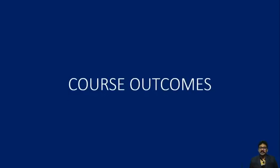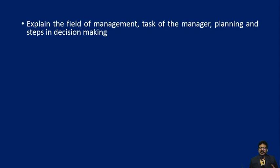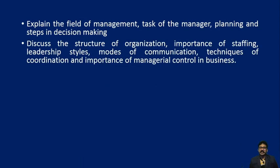After learning this course, a student will be able to do the following. Course Outcome 1: explain the field of management, the task of a manager, planning, and steps in decision making. Course Outcome 2: discuss the structure of an organization, importance of staffing, leadership styles, methods and modes of communication, techniques of coordination, and importance of managerial control in business.